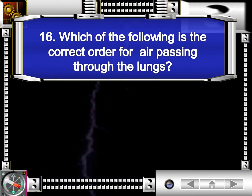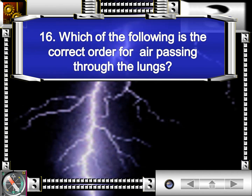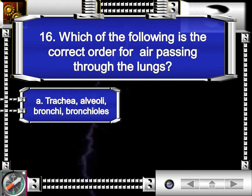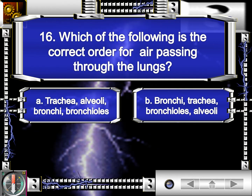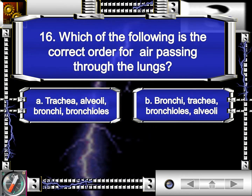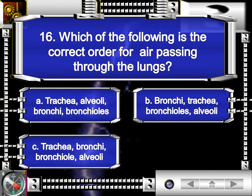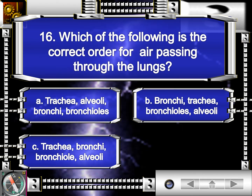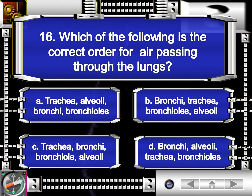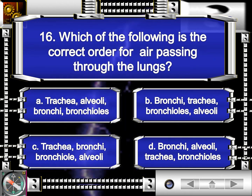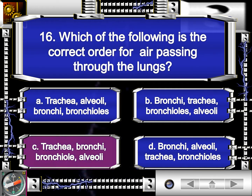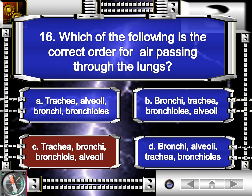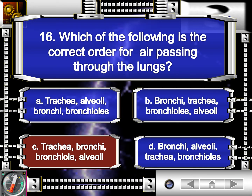Number 16. Which of the following is the correct order for air passing through the lungs? Is it A, trachea, alveoli, bronchi, bronchioles? Letter B, bronchi, trachea, bronchioles, alveoli? Letter C, trachea, bronchi, bronchioles, alveoli? Or letter D, bronchi, alveoli, trachea, bronchioles? The answer is letter C: trachea, bronchi, bronchioles, alveoli.